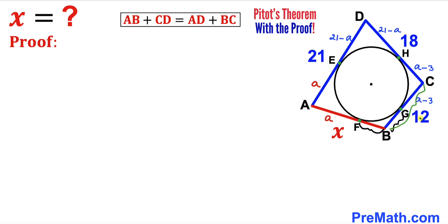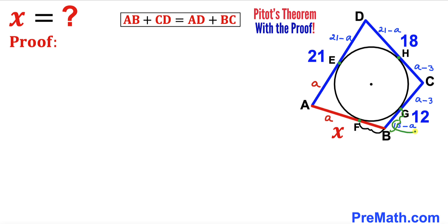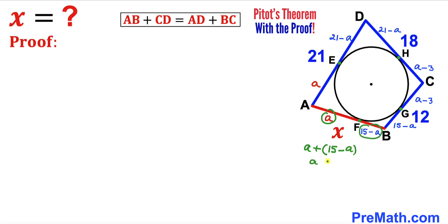The full side BC is 12 and CG is a minus 3, so segment BG equals 12 minus (a minus 3), which simplifies to 15 minus a. Therefore segment BF also equals 15 minus a. Now X equals AF plus FB, which is a plus (15 minus a). The a terms cancel out.